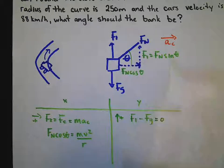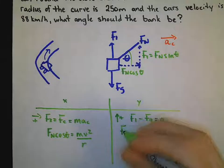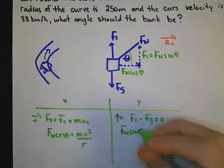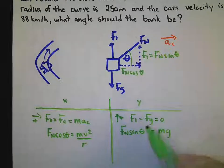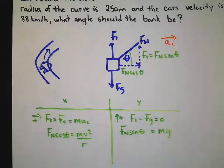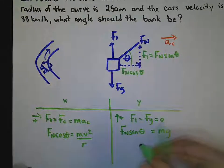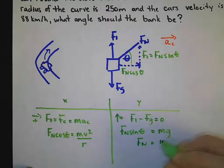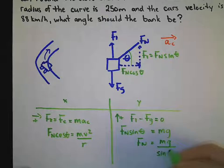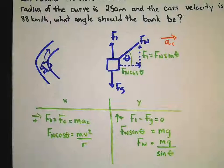F1 is Fn sin theta. And that will be equal to the mass multiplied by the gravity when I bring my force of gravity to the other side. So therefore, Fn is equal, rearranging this, mg over my sine of my angle theta. And remember, theta is what we are looking for in this case.